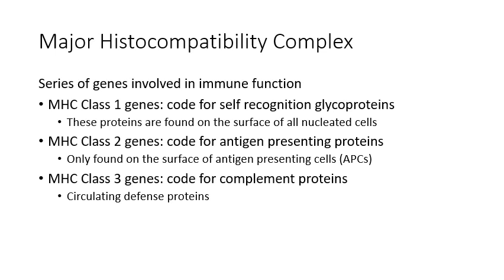No two people will have identical MHC class 1 unless they're identical twins. MHC class 2 genes code for proteins found only on the surface of antigen presenting cells — macrophages, dendritic cells, and B cells — because these proteins are the ones actually presenting the antigen to the T cell. MHC class 3 genes code for the proteins in your complement system — those blood proteins that can be triggered to create membrane attack complexes and poke holes in the surface of bacterial cells when directed to do so by antibodies.